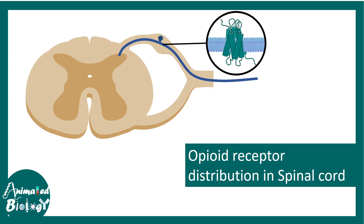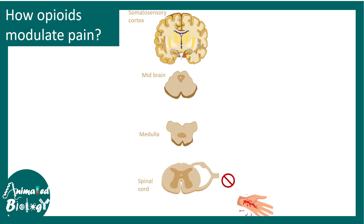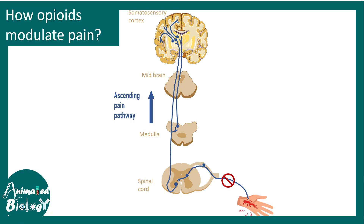In the spinal cord, opioid receptors are found in the dorsal horn, where they modulate pain signals. Looking at the pain pathway, there is an ascending pathway which brings the sensation of pain from peripheral organs up to the brain — to the somatosensory cortex. This pain pathway is the key modulator for pain sensation, and if it is blocked — which opioid receptors actually do — then the pain sensation reaching the brain is modified. That is how opioids work as analgesics.